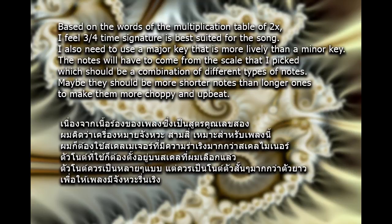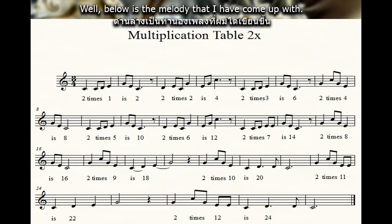Based on the words of the multiplication table of two times, I feel a three-four time signature is best suited for the song. I also need to use a major key that is more lively than a minor key. The notes will have to come from the scale that I picked, which should be a combination of different types of notes — maybe more shorter notes than longer ones to make them more choppy and upbeat. Below is the melody that I have come up with.